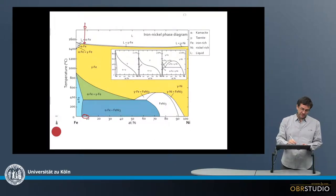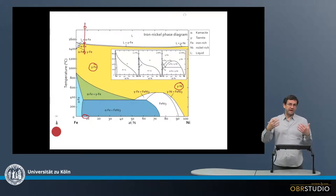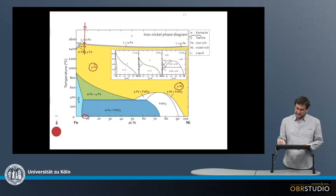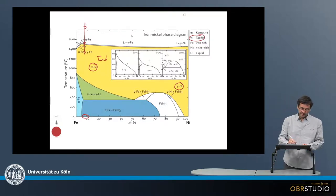It solidifies into a solid solution series here. The solid solution series consists of gamma iron and gamma nickel. Gamma iron is the iron-rich side of the solid solution and gamma nickel the nickel-rich side. The gamma iron is also called taenite, which is shown up here. This is taenite, a nickel-rich, comparatively iron-poor metal.